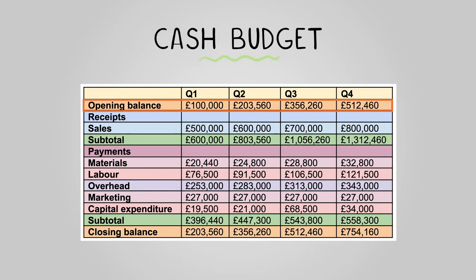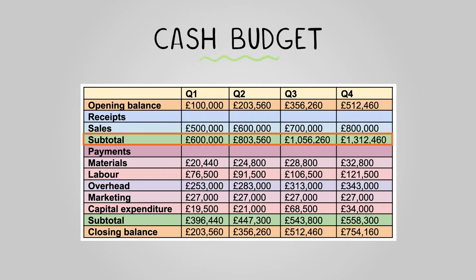Opening balance — the amount of cash currently held by the enterprise at the start of the period. Receipts — a list of all revenues budgeted to be obtained by the enterprise. Receipts subtotal — calculated by adding the opening balance to the receipts.